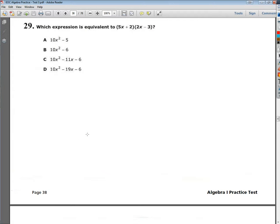Welcome. This is the end of course Algebra 1 practice test number 3, question number 29. The question says, which expression is equivalent to the quantity 5x plus 2 times the quantity 2x minus 3? Then it gives me three choices.